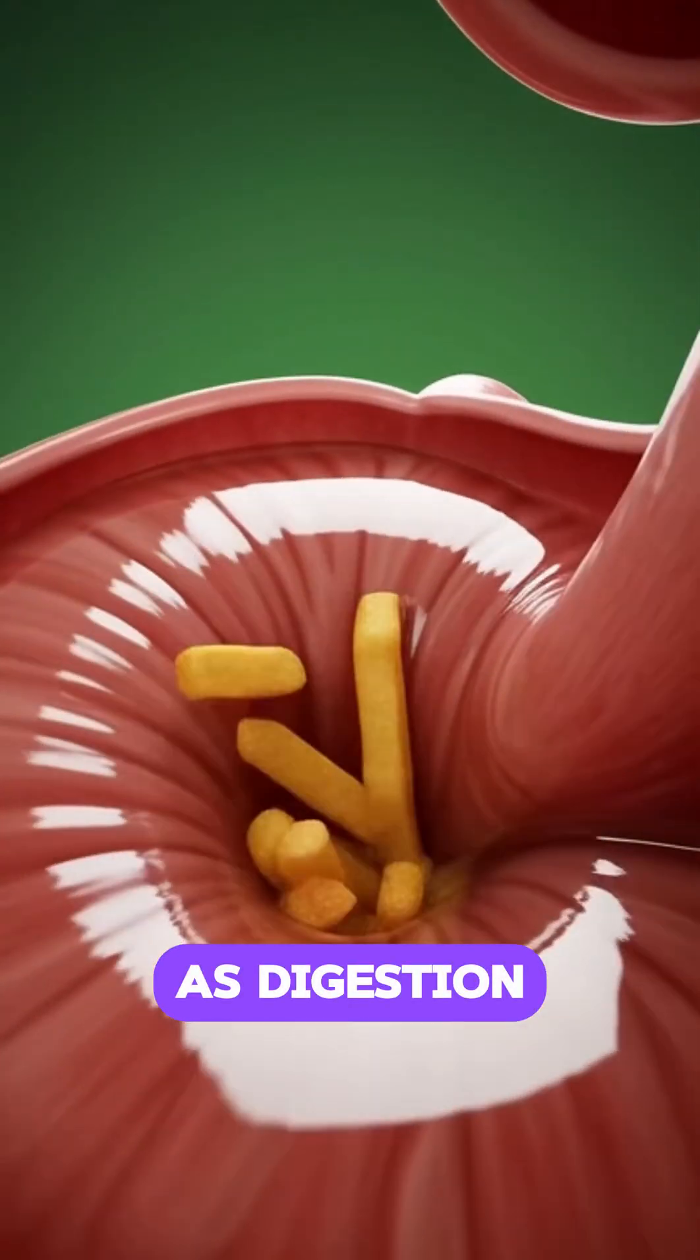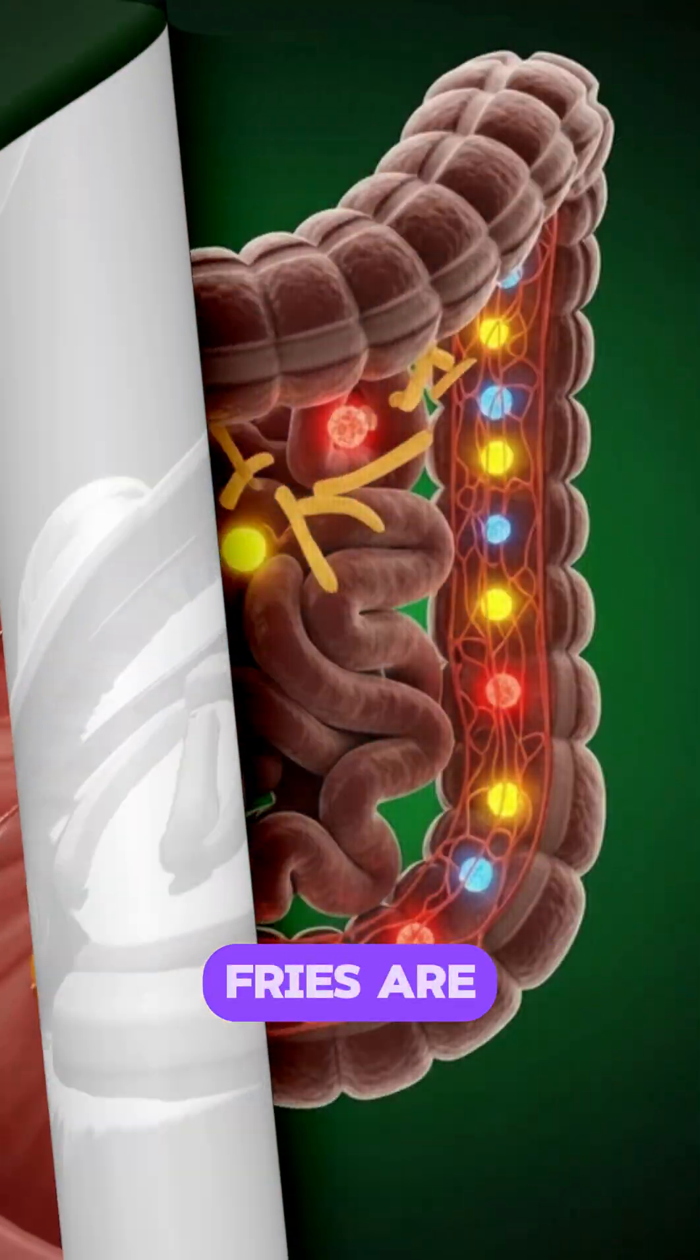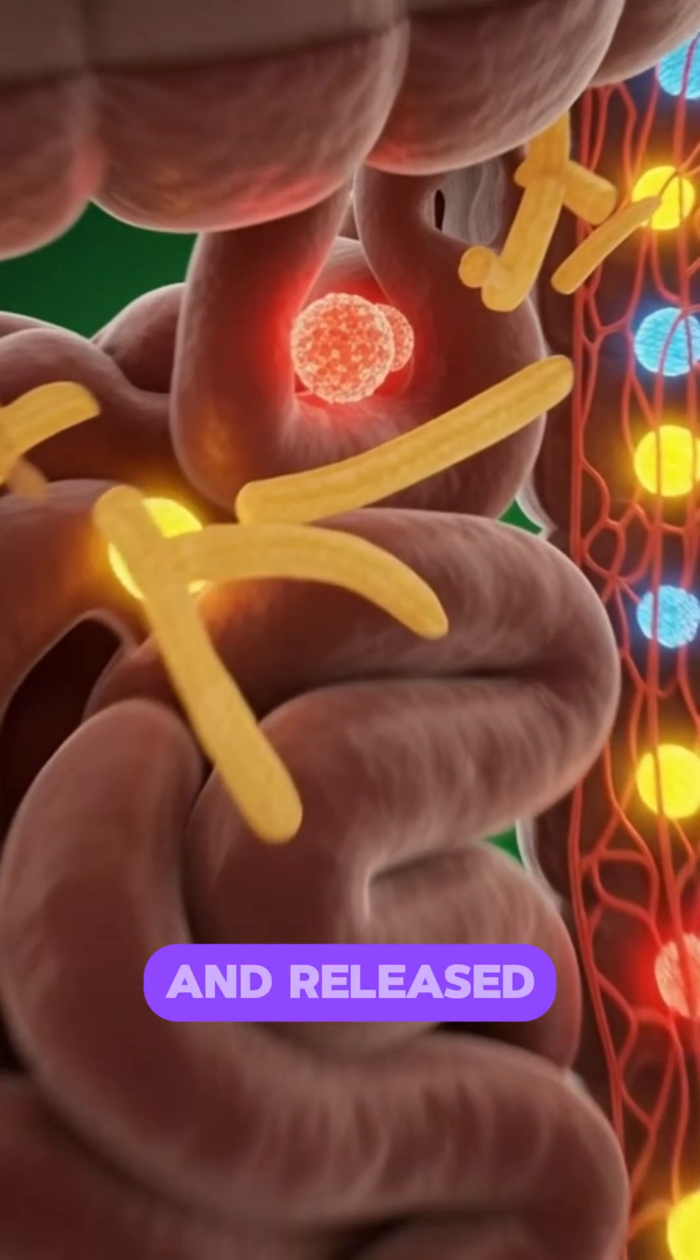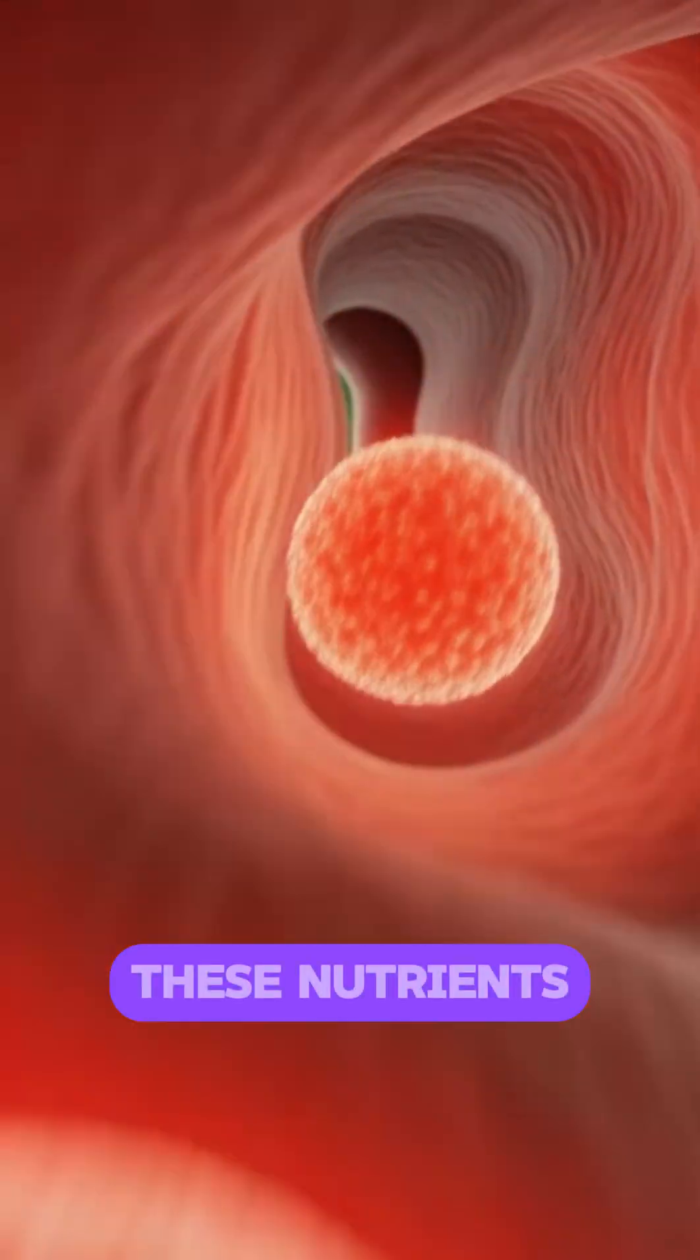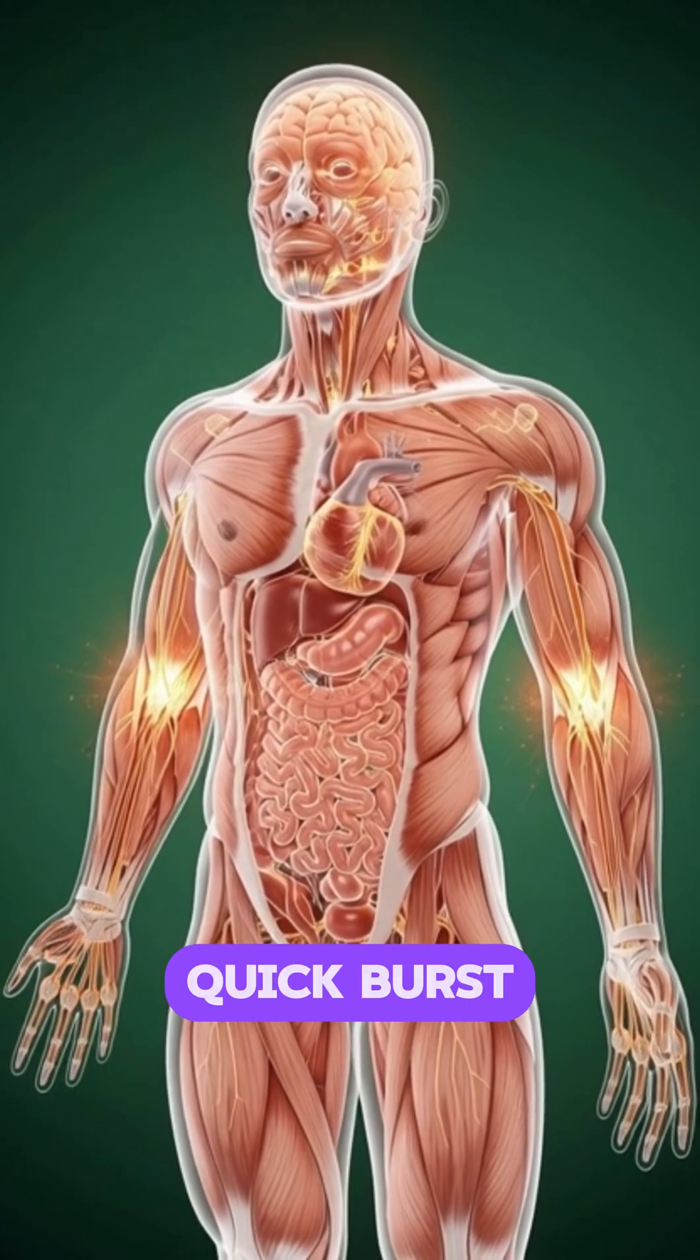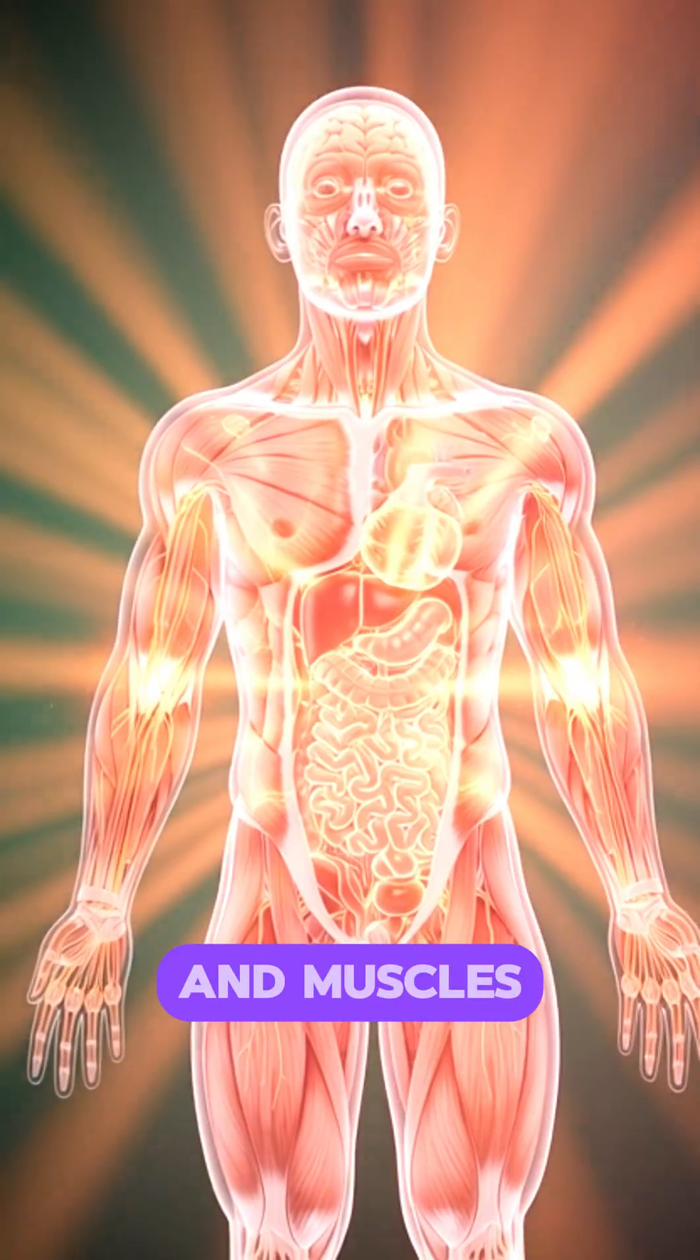As digestion continues, nutrients from fries are absorbed in the intestines and released into the bloodstream. These nutrients spread throughout the body, providing a quick burst of energy to organs and muscles.